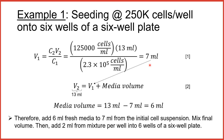Aside from knowing how much volume we need from the cell suspension, we also need to determine how much volume of fresh media we need to add to the cell suspension. Since we know that the final diluted cell suspension is 13 milliliters, we can find the volume of fresh media by subtracting the initial cell suspension volume of 7 milliliters from the final cell suspension volume of 13 milliliters, resulting in 6 milliliters of media. Therefore, to seed the cells at 250,000 cells per well, we need to prepare a cell suspension consisting of 6 milliliters of fresh media and 7 milliliters of the initial cell suspension. Then we can add 2 milliliters per well from this final suspension.